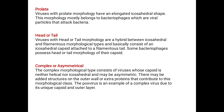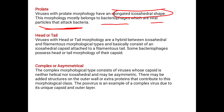Next is the prolate form — a special type of virus structure. Viruses with prolate morphology have an elongated icosahedral shape. This morphology mostly belongs to bacteriophages, which are viral particles that attack bacteria.